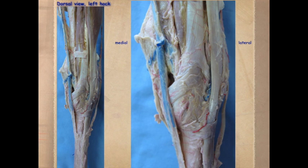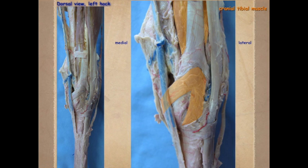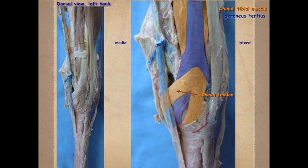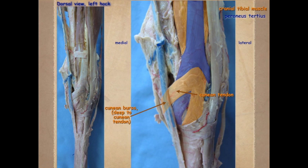Looking down at the region of the hock — this is a dorsal view. Here we see the cranial tibial muscle coming down; it has a dorsal ligament as well as a medial ligament. That medial ligament is referred to as the cunean tendon. Notice the peroneus tertius coming down — it also has a dorsal ligament but also a lateral ligament. That cunean tendon is going to cross and go right up over the cunean bursa. In cases of bursitis or with osteoarthritis of the hock, known as spavin, the cunean tendon may be transected to relieve pressure off the joint, though the value of doing this is questionable.